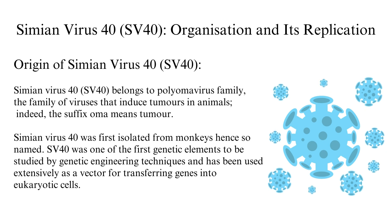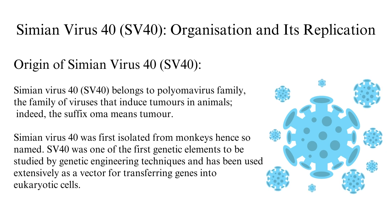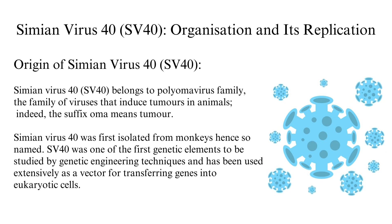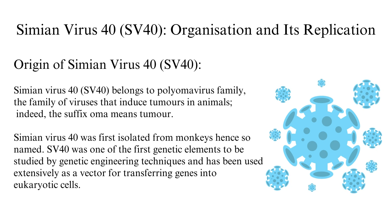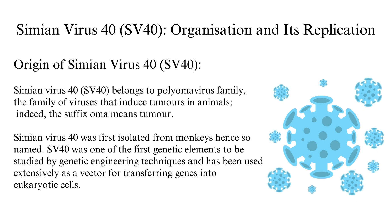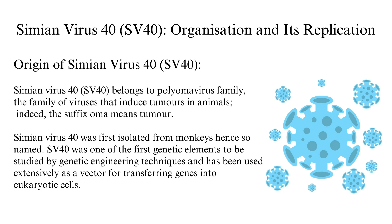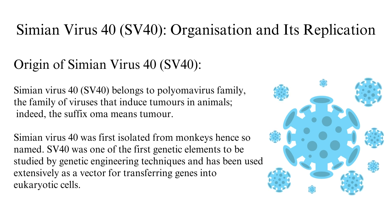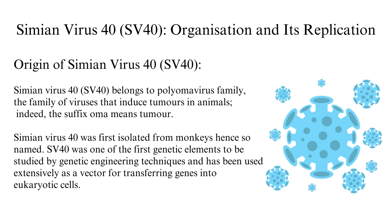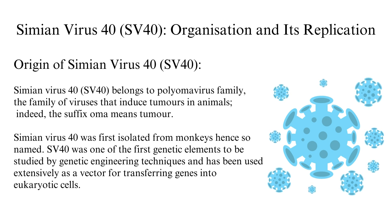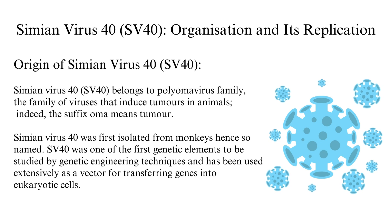Simian virus 40 belongs to the polyomavirus family — the family of viruses that induce tumors in animals. Indeed, the suffix 'oma' means tumor. Simian virus 40 was first isolated from monkeys, hence its name. SV40 was one of the first genetic elements to be studied by genetic engineering techniques and has been used extensively as a vector for transferring genes into eukaryotic cells.